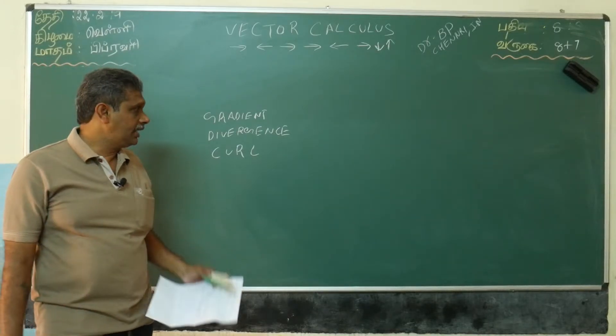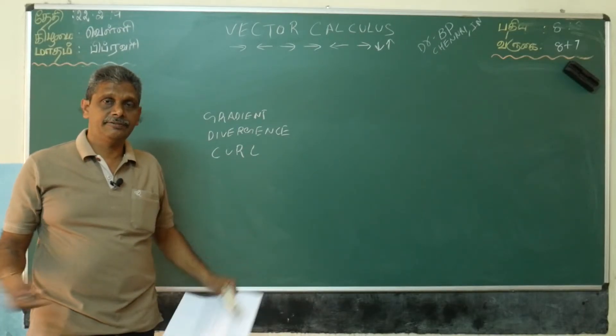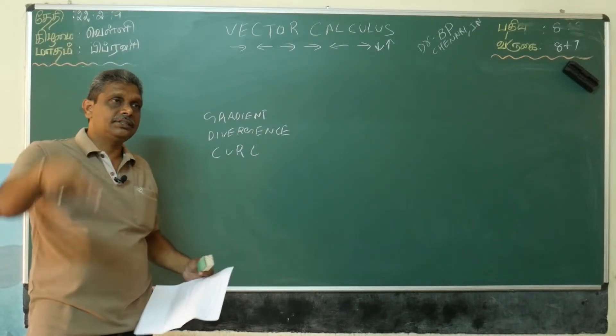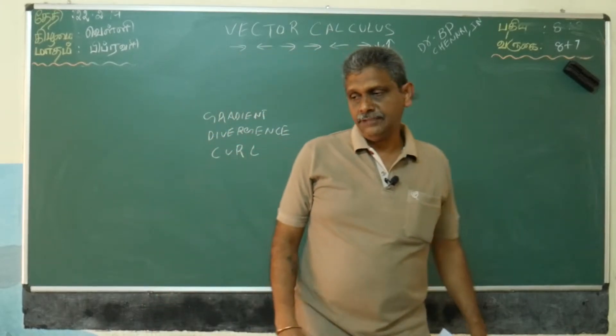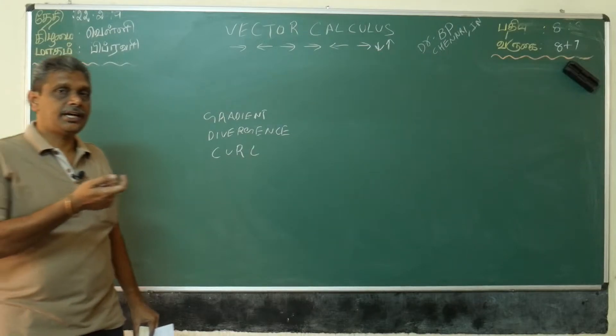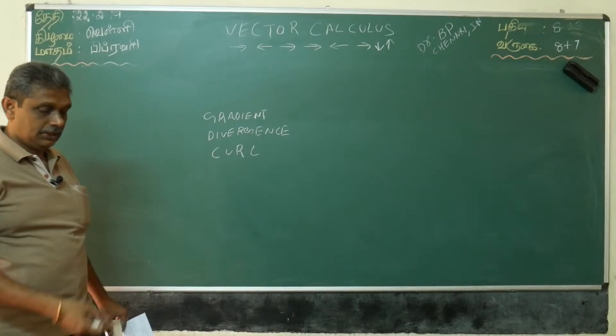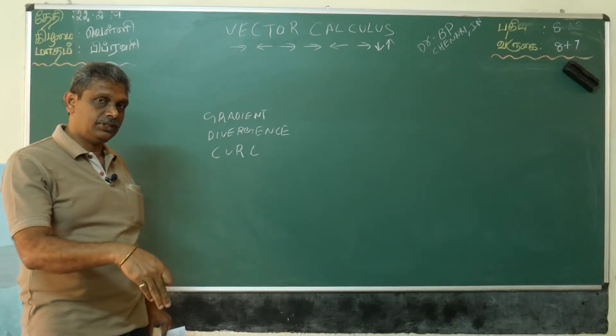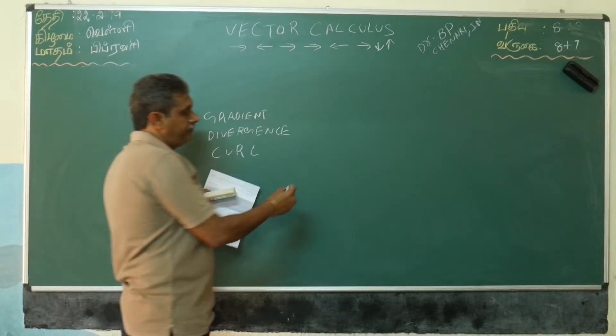Then divergence is the spread of force, how much it spreads off. If you take a particular point, that point is called source. Suppose if you open the tap, from the tap you see water will flow very highly, this is called source. In sink you see it's going down very slowly, this is called sink.